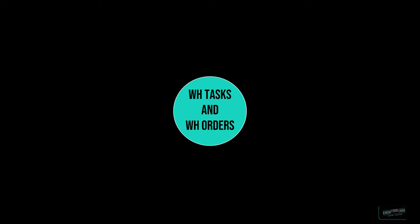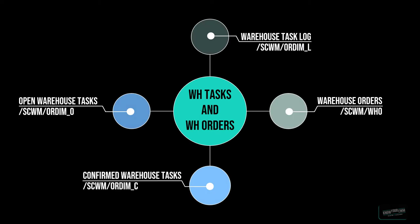In this episode we are going to focus on four different EWM tables that handle the information of Warehouse Tasks and Warehouse Orders. As we already mentioned in the first episode when we were showing you the Handling Unit Tables, there are of course more tables with information concerning the tasks and orders, but as always we are focused on the most important ones. So let us have a look.